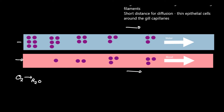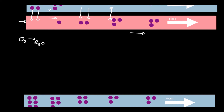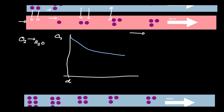If the blood moved in the same direction as the water — I've represented the oxygen in the water as purple blobs — the oxygen is going to diffuse down its concentration gradient into the blood as they travel alongside each other. As this happens, oxygen will go into the blood and more oxygen will diffuse in until there is no concentration gradient, until the concentrations of oxygen in the water and blood are the same. If we plot a graph of distance along the capillary against oxygen concentration, the concentration in the water is going to fall and in the blood is going to rise until they reach an equilibrium.